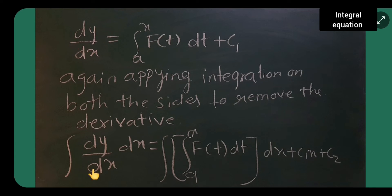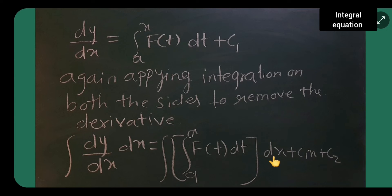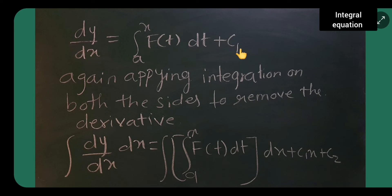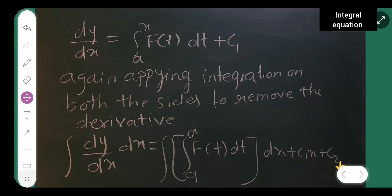Again, applying integration on both sides to remove the derivative. Integrating dy by dx into dx equals integral from a to x. This integral applied to the function gives the result. Integrating c1 with respect to dx gives c1 times x, plus there will be one more constant of integration, that is c2.